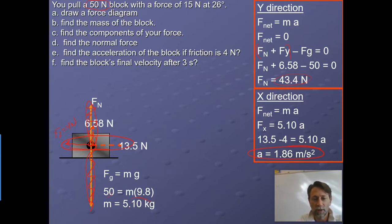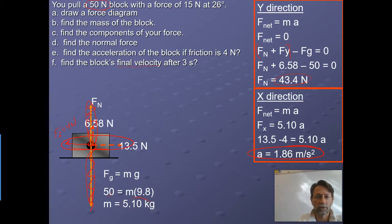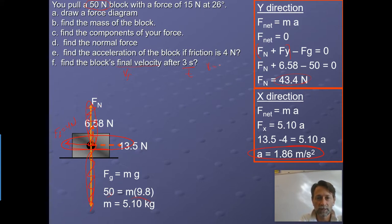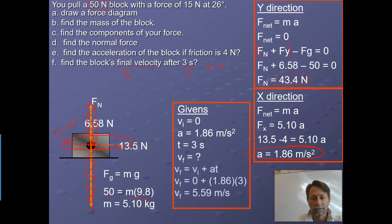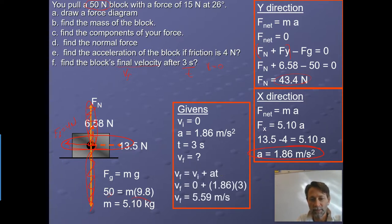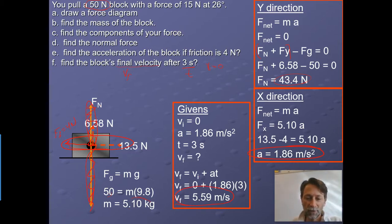Now that we have the acceleration, we can find kinematic variables. Find the block's final velocity after 3 seconds. Assuming initial velocity is zero, we use VF equals VI plus AT. Plug in zero for VI, 1.86 for acceleration, and 3 for time, giving a final velocity of 5.59 meters per second.